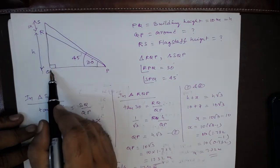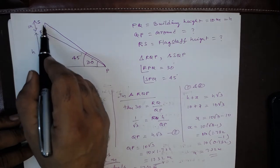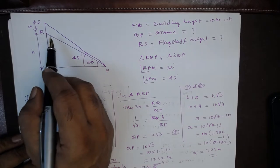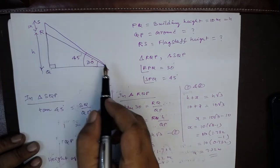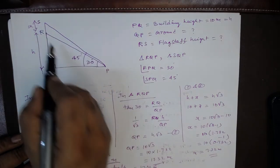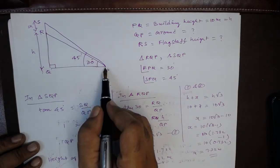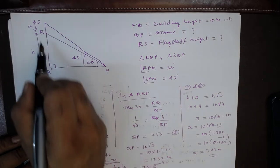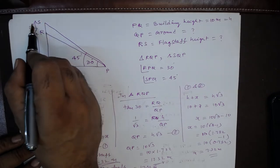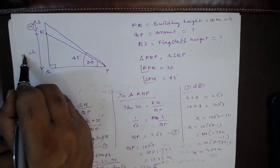RQ is the height of the building. On the top of the building SR, that is the flagstaff, is fixed. And the angle to the top of the flagstaff from point P is 45 degrees. Find the length of the flagstaff, that is RS. You can take this as X. H is given as 10 meters.